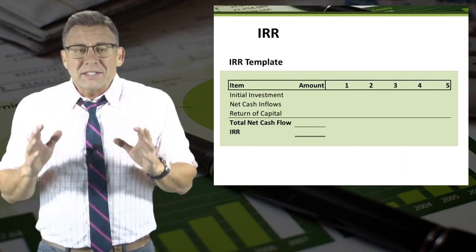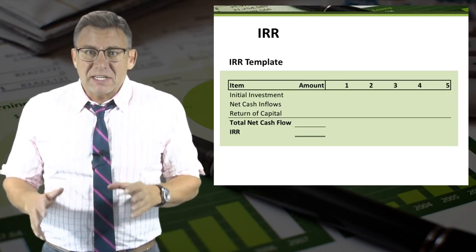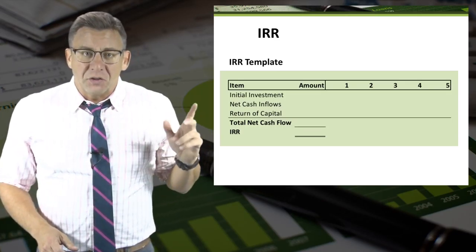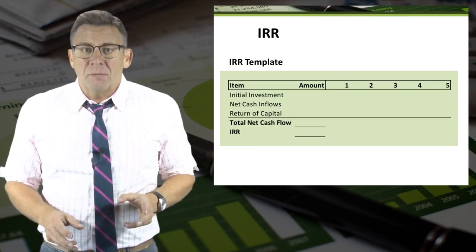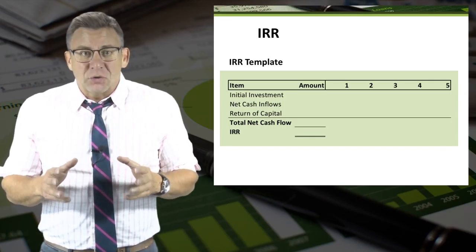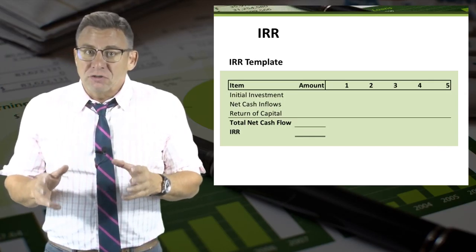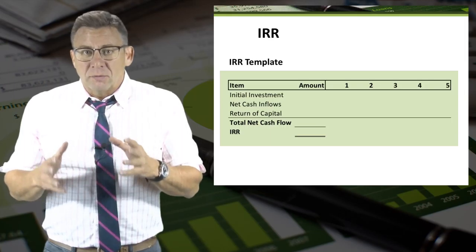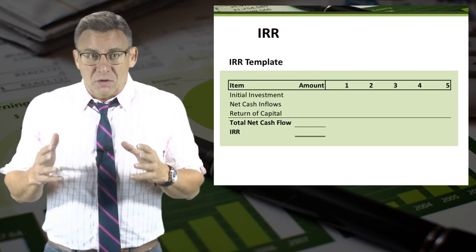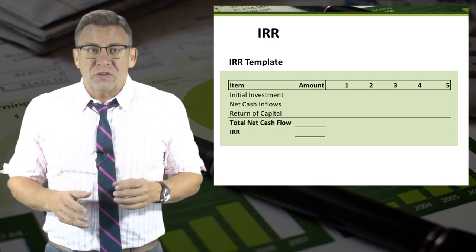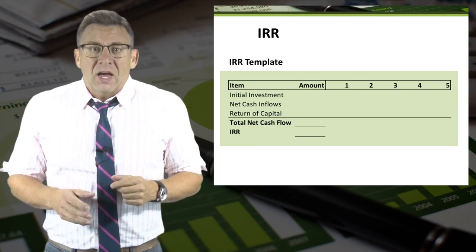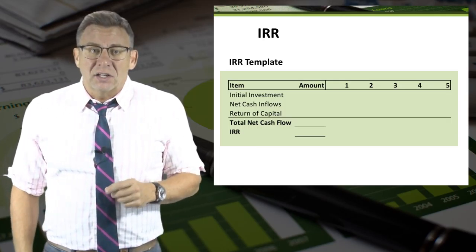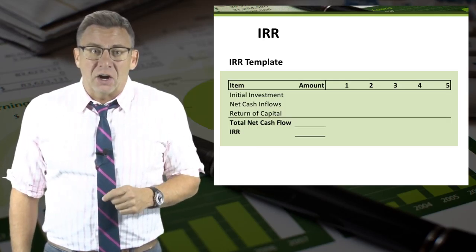When I solve internal rate of return assignments, I usually set up a table like this. Under the items column, I can enter the items that create cash inflows and outflows. The other columns group the cash flows in the period in which they occur, and they can be netted together so I can use Excel to solve for IRR.